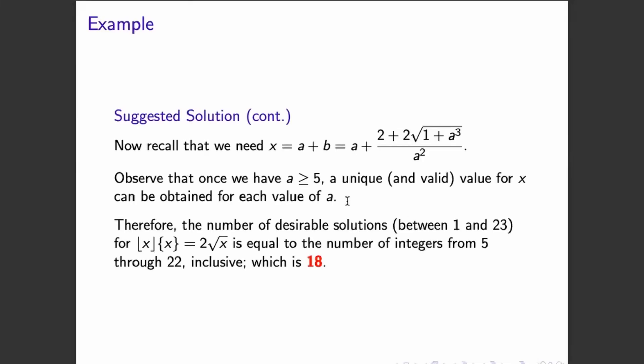the number of desirable solutions between 1 and 23 for the given equation is simply equal to the number of integers from 5 through 22 inclusive. And if we count that one, we will get 18 as our answer to the problem.